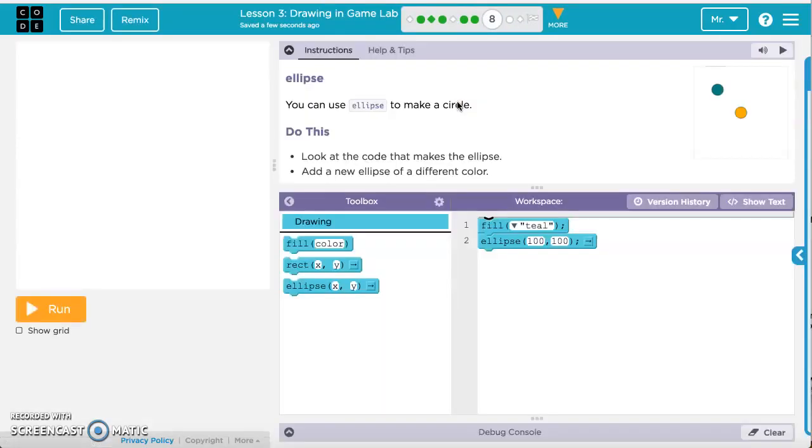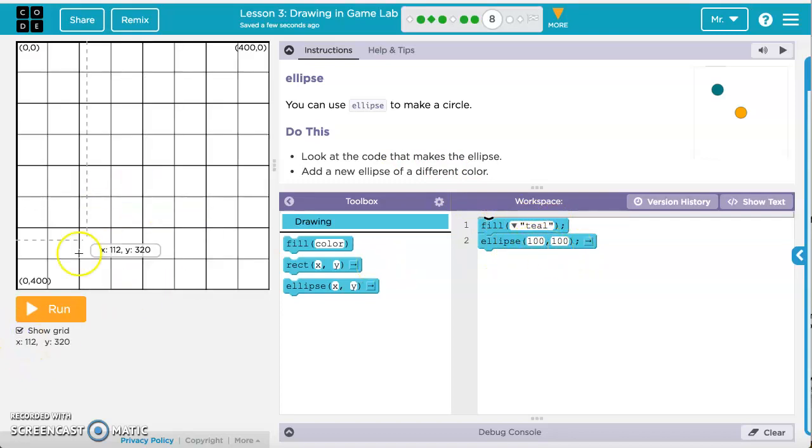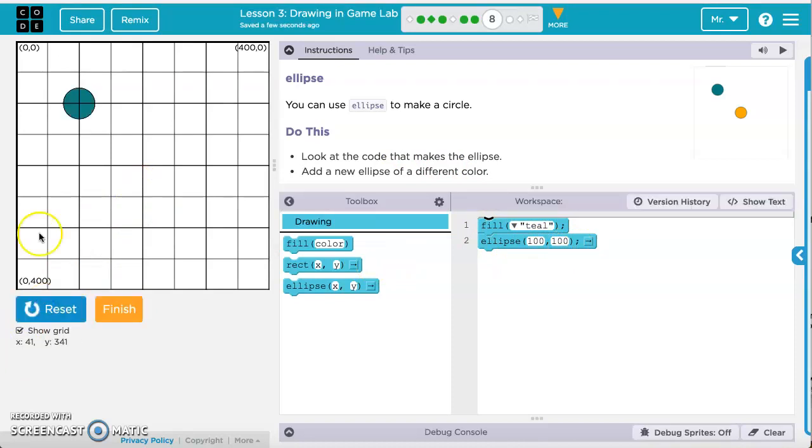Now if we move to exercise 8, it's asking us, it's telling us we can make an ellipse for a circle, and it's telling us to look at the code that makes the ellipse. So we've got ellipse here, it's teal, the fill color, the ellipse is located at 100, 100, so that's where it's drawn from. The center is at 100, 100 if we run it, right here, 100 over, 100 down.